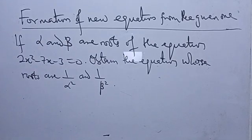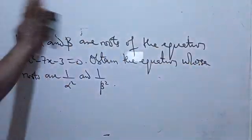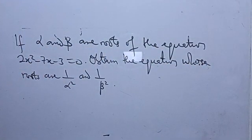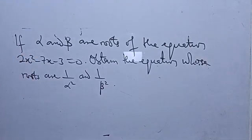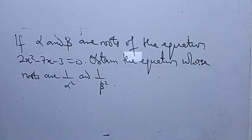Let's try to solve that. We need to keep this somewhere. So 2x squared minus 7x minus 3 equals 0 — that's the equation given. We need to find 1 over alpha squared and 1 over beta squared.